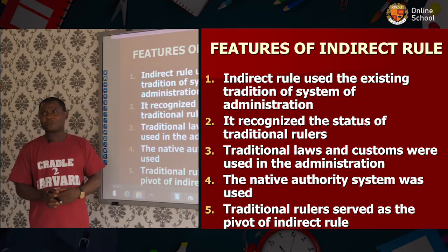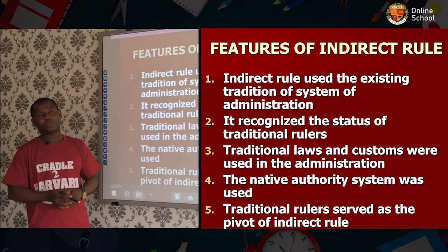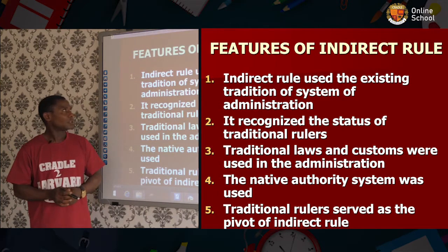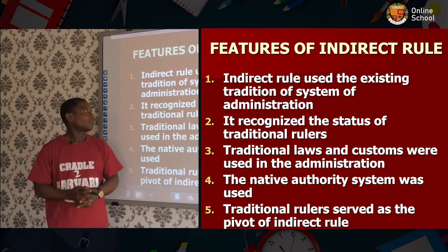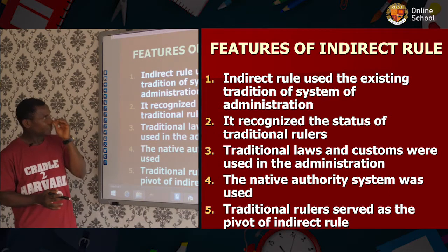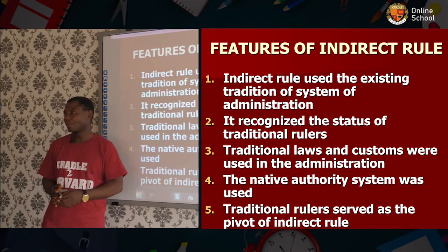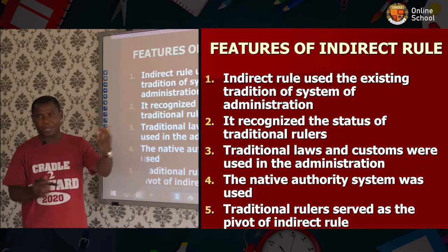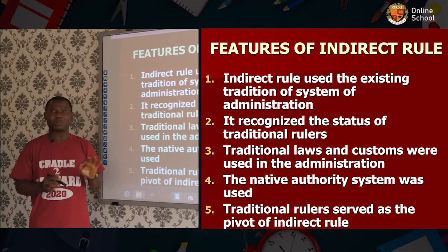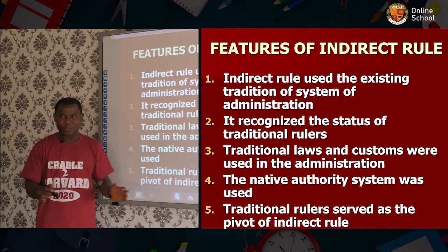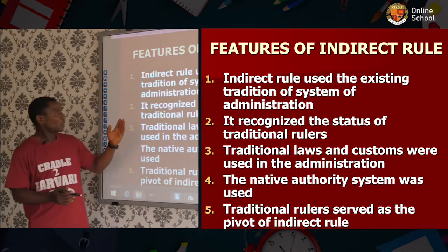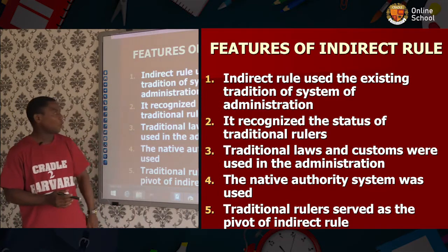Now we want to look at the features of indirect rule. Feature one: it used the existing traditional system of administration. As I told you, before the British came, the north particularly had an organized system of administration, and immediately the British came, they made use of the system they met on the ground. Feature two: it recognized the status of traditional rulers.